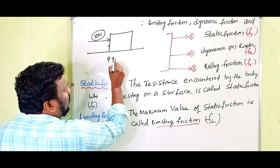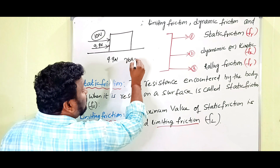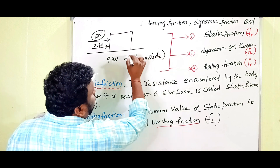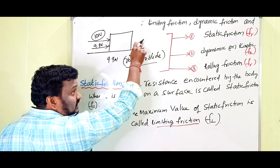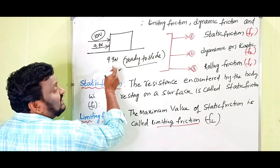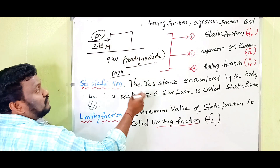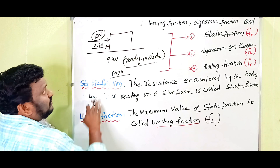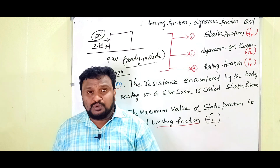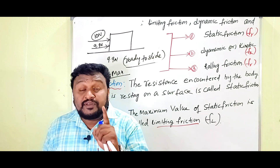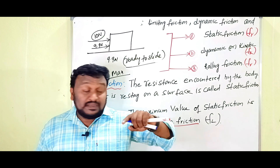When we apply 9.9 newtons it does not move, but it is ready to slide. It is still in a static condition. When the body is ready to slide, the static friction is at its maximum value — and that maximum static friction is called limiting friction.